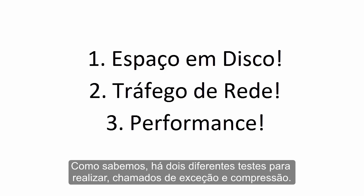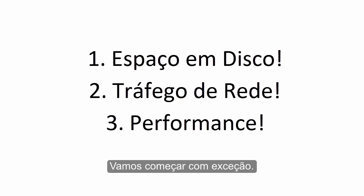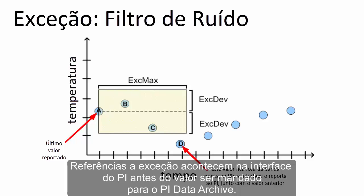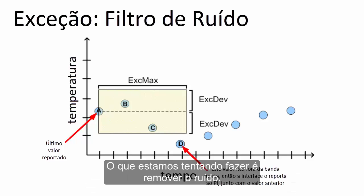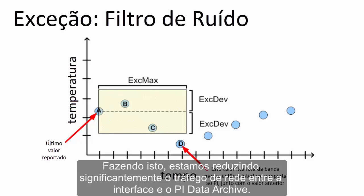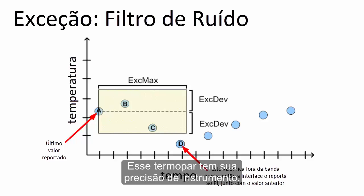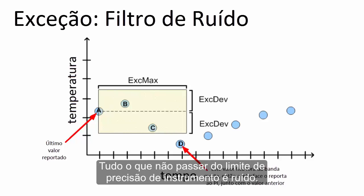There are two different tests which we perform, namely exception and compression. Exception reporting takes place on the PI Interface before the value is actually sent to the PI Data Archive. What we are trying to do is remove the noise, significantly reducing the network traffic between the PI Interface and the PI Data Archive. To understand this, consider a thermocouple monitoring temperature — this thermocouple has some instrument precision, where anything that falls within the instrument precision is really the noise.